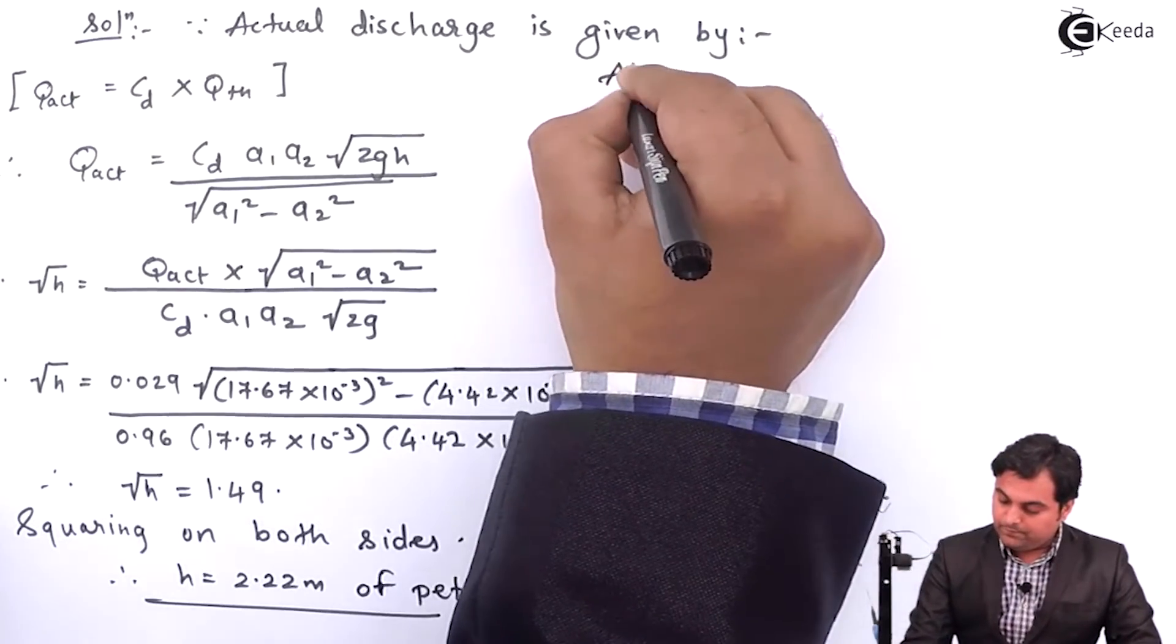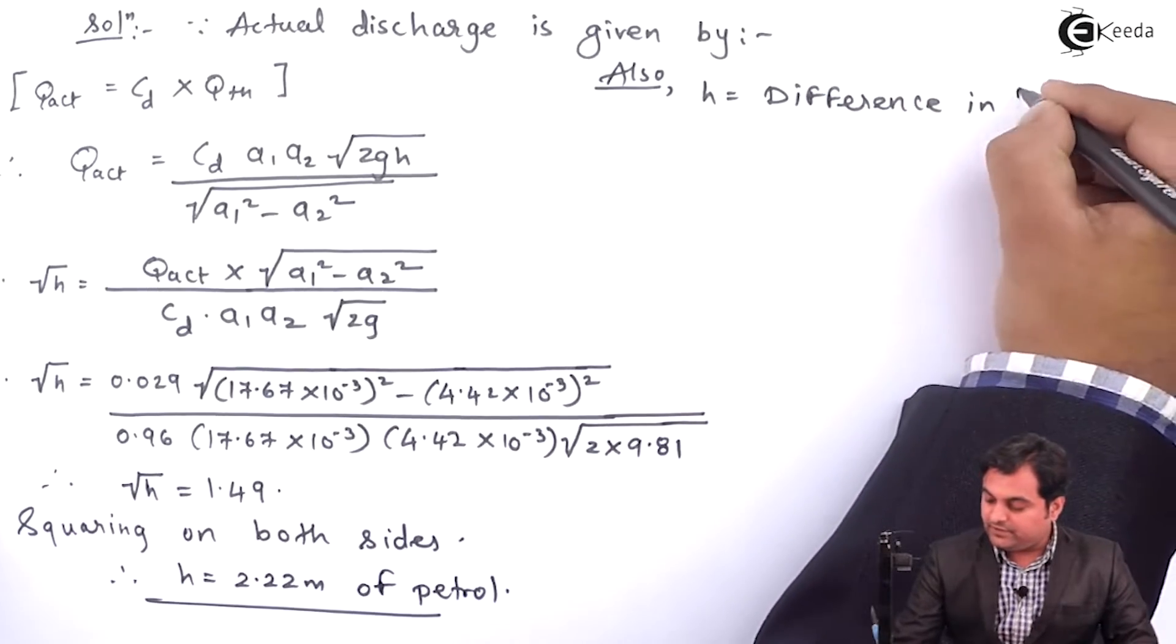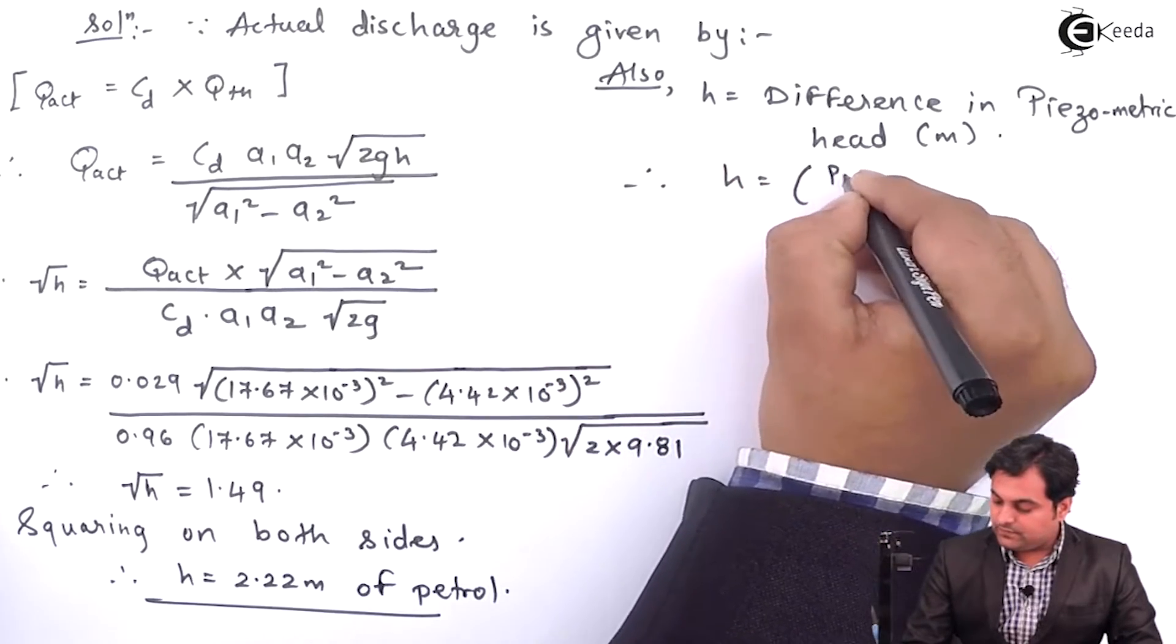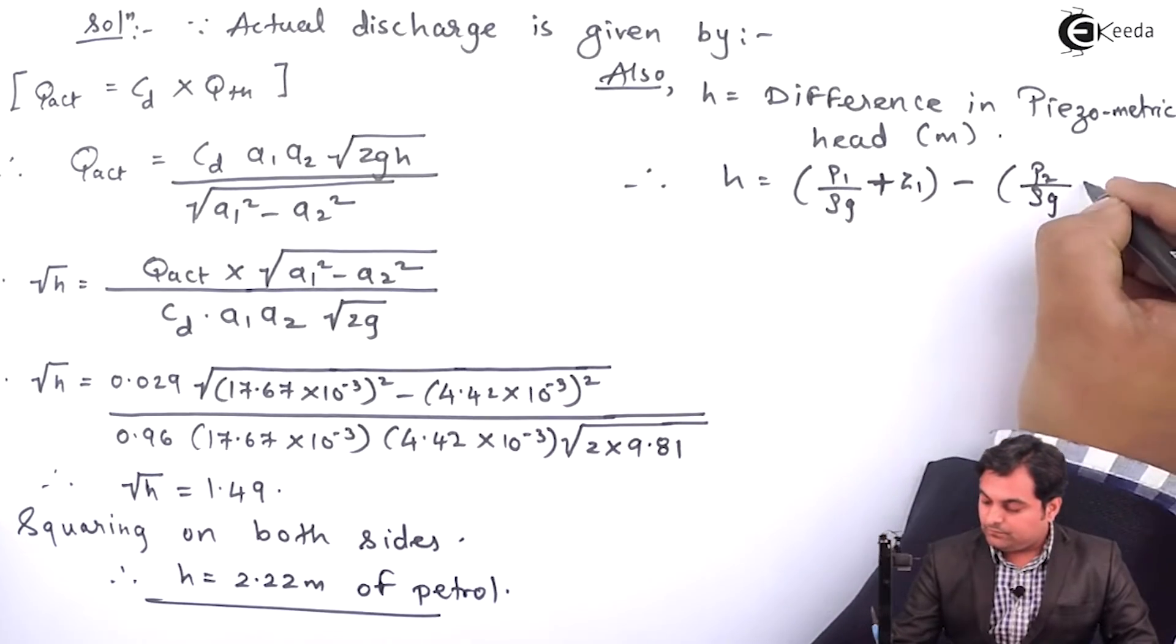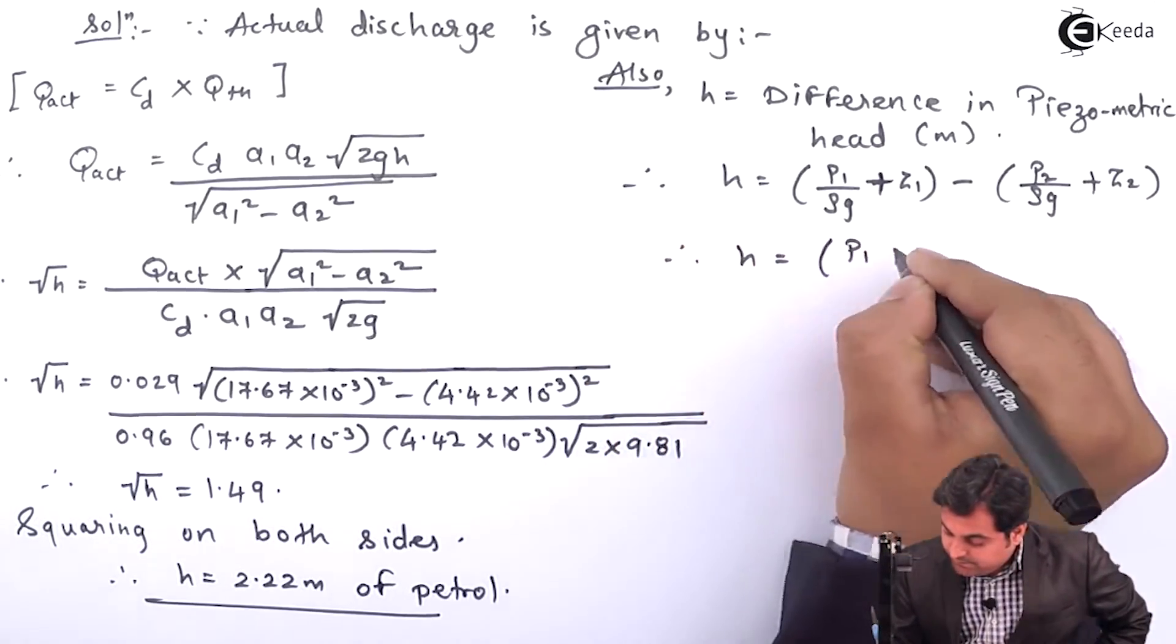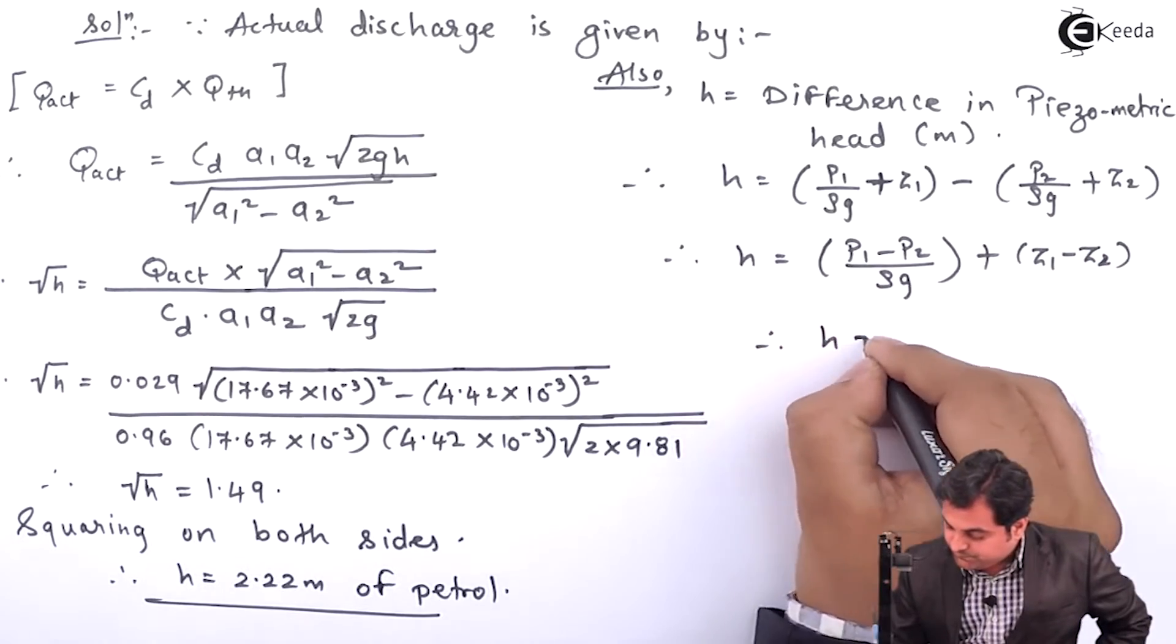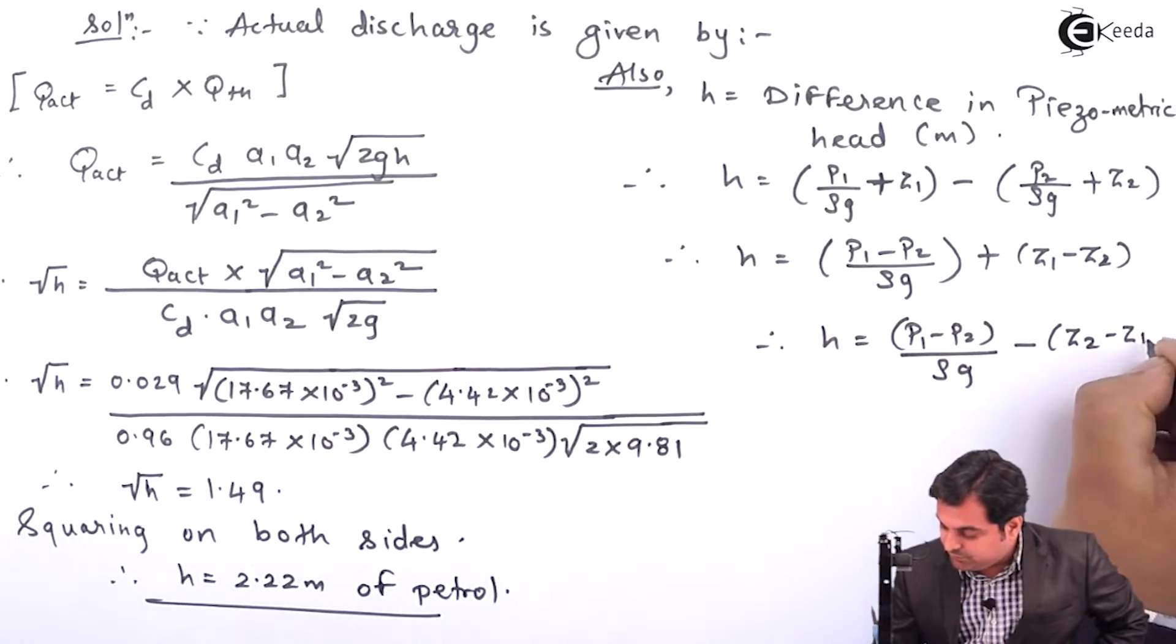Now, h is called as difference in piezometric head. And that is given as pressure head and potential head at section 1 minus pressure head and potential head at section 2. That is called as piezometric head. Therefore, I will keep P1, P2 together. Z1, Z2 together. If I take minus common that will be Z2 minus Z1.